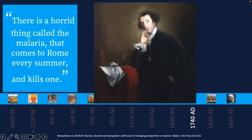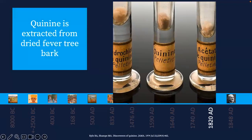Around 1640 AD, Jesuit priests established trade routes to transport cinchona bark from Peru to Europe. The Quechua, Canari, and Chimu people already knew it to treat intermittent fevers. By 1677, this bark was listed in the London Pharmacopoeia as an official medicine. In 1820, Pelletier and Caventou managed to separate the alkaloids cinchonine and quinine from powdered fever tree bark, meaning specific doses of quinine could be given for the first time.